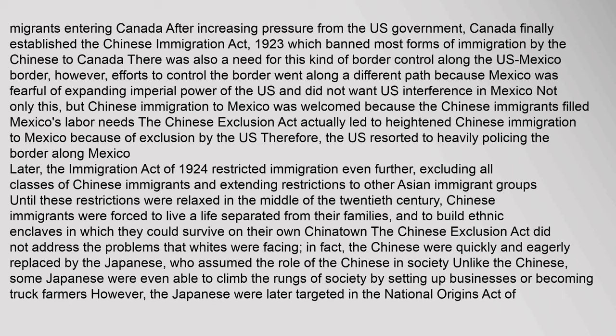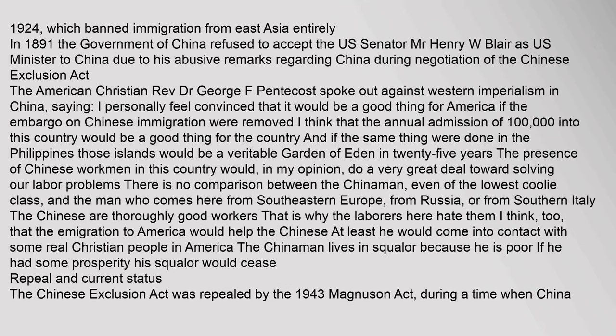In the middle of the 20th century, Chinese immigrants were forced to live separated from their families and to build ethnic enclaves — Chinatowns — in which they could survive on their own. The Chinese Exclusion Act did not address the problems that whites were facing; in fact, the Chinese were quickly replaced by the Japanese, who assumed a similar role in society. Unlike the Chinese, some Japanese were even able to climb the social ladder by setting up businesses or becoming truck farmers. However, the Japanese were later targeted in the National Origins Act of 1924, which banned immigration from East Asia entirely.